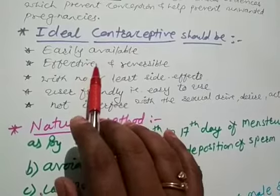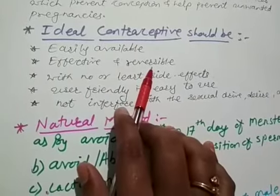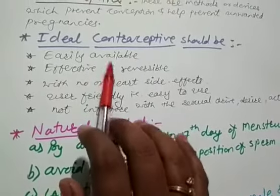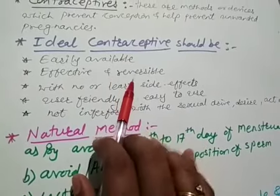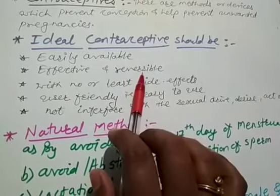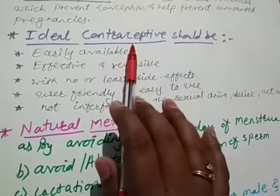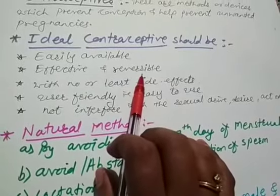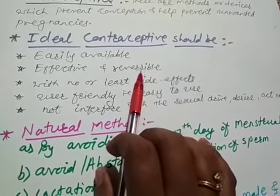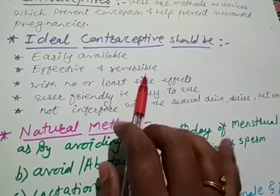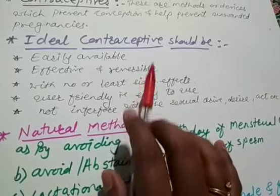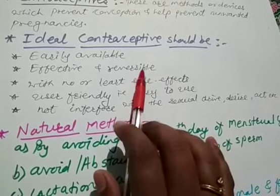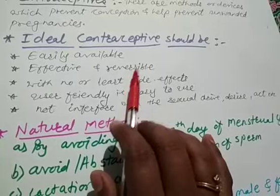The second thing is that it must be effective and reversible. It should be effective so that it avoids unexpected pregnancies. It should also be reversible because these contraceptives are used for temporarily avoiding pregnancy. If the couple later wants a child, the contraceptive can be stopped and there will be no lasting effect on the health of that person.